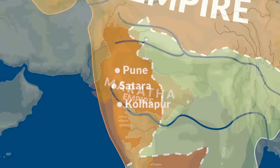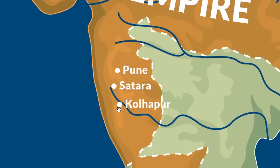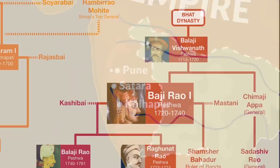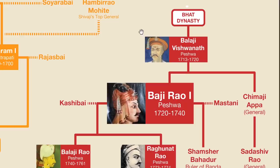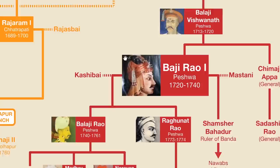On this map, you can see Satara, which is where the Chhatrapatis had their court, as well as Kolhapur, where the Raja from that branch of the family was located. But you can also see Pune — this is where the Peshwas ruled from, and was thus the true capital of the Maratha empire. So at this point, let's look at the Peshwa family tree. As I mentioned earlier, it starts with Balaji Vishwanath. But it was during the rule of his son Baji Rao I that most of the Maratha conquests took place.